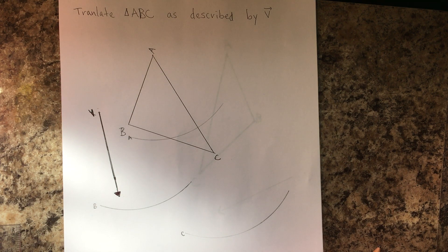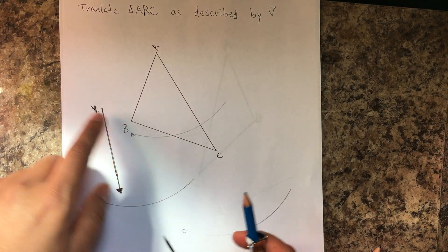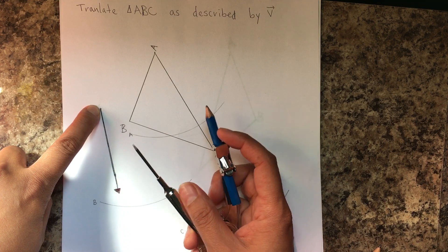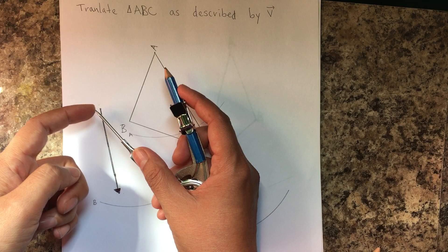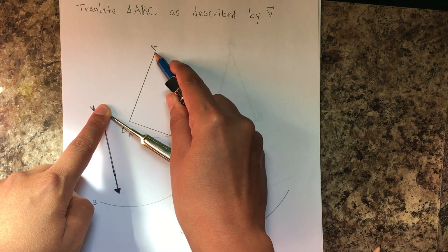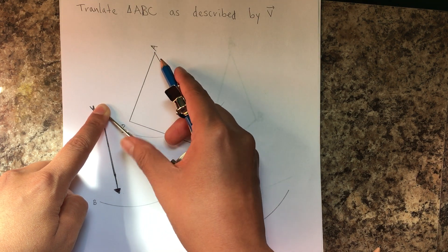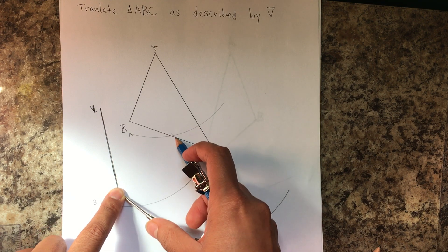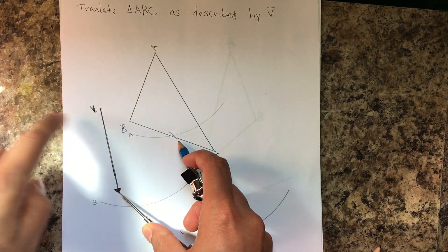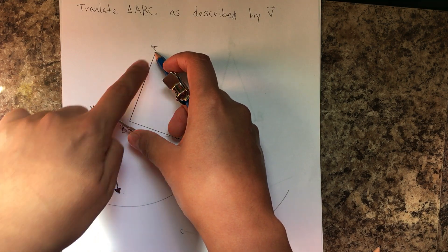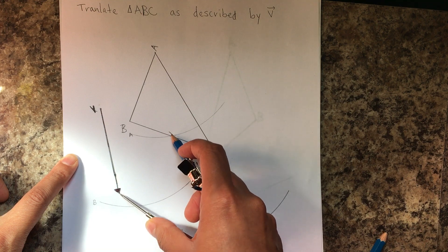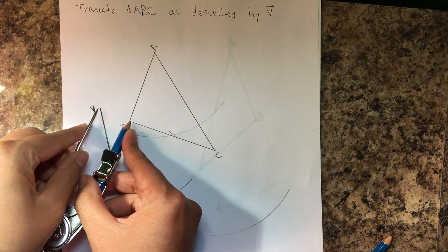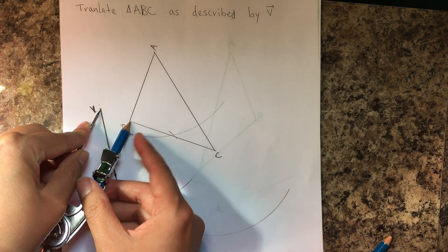The second thing you have to do — I'll go in alphabetical order, though it doesn't matter — is go to the endpoint of the vector. Put the point of the compass without the pencil on the endpoint, open it so that the pencil is on vertex A, then move to the tip of the vector and find the intersection with the arc for A. What I did was go from the endpoint, open the compass to vertex A, and mark right there.